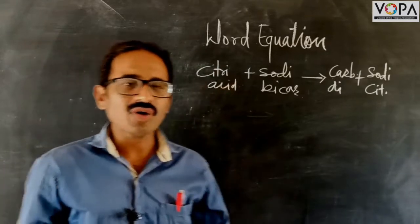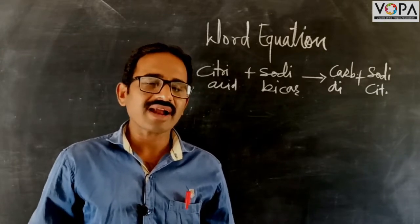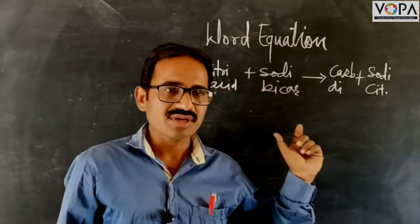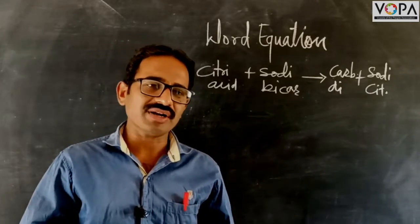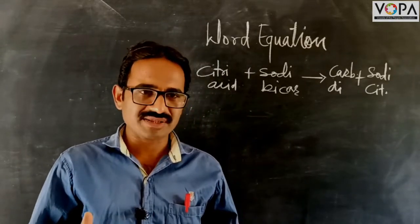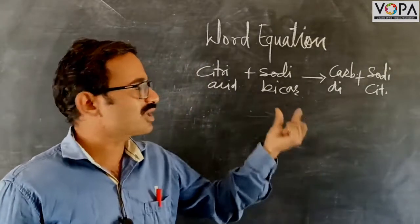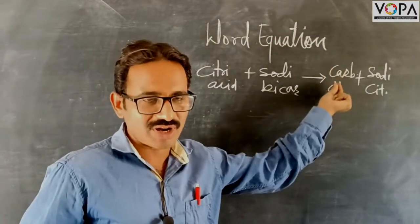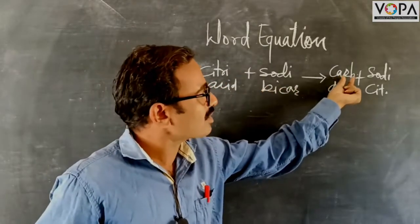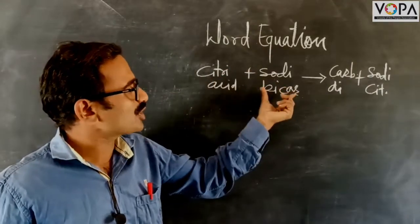Now we will study chemical change and word equation. If we know the chemical combination of the initial substance and newly formed substance, then we can write the formula for a chemical equation and its word equation. For example, if we add sodium bicarbonate — that is baking soda — on lemon juice, then there is a formation of bubbles. When we add citric acid on sodium bicarbonate, we get bubbles of carbon dioxide.